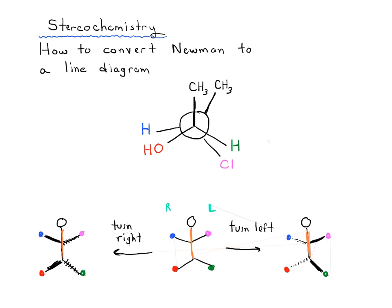So what we're going to do when converting our Newman projection to a line diagram is choose our axis — just like the axis was the person's torso. I like to think of a Newman as a clock: 12 o'clock up top, 6 o'clock at the bottom. You always want to pick the 12-to-6 axis. That means our CH3 at the front and CH3 at the back are actually in the same plane — that's our axis.